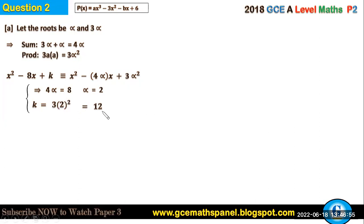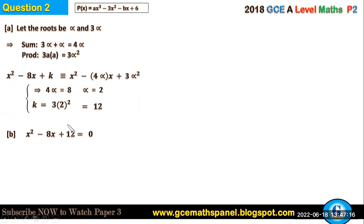Now that k = 12, we solve x² - 8x + 12 = 0. Using factorization: x² - 6x - 2x + 12 = 0. These two factors multiply to give +12 (the constant) and add to give -8 (the coefficient of x).